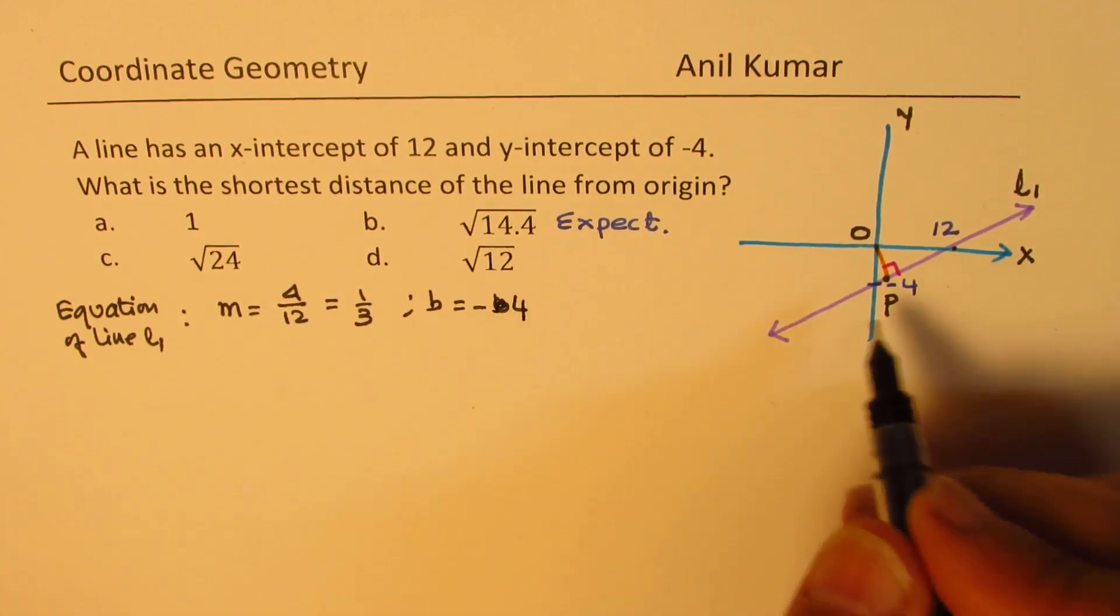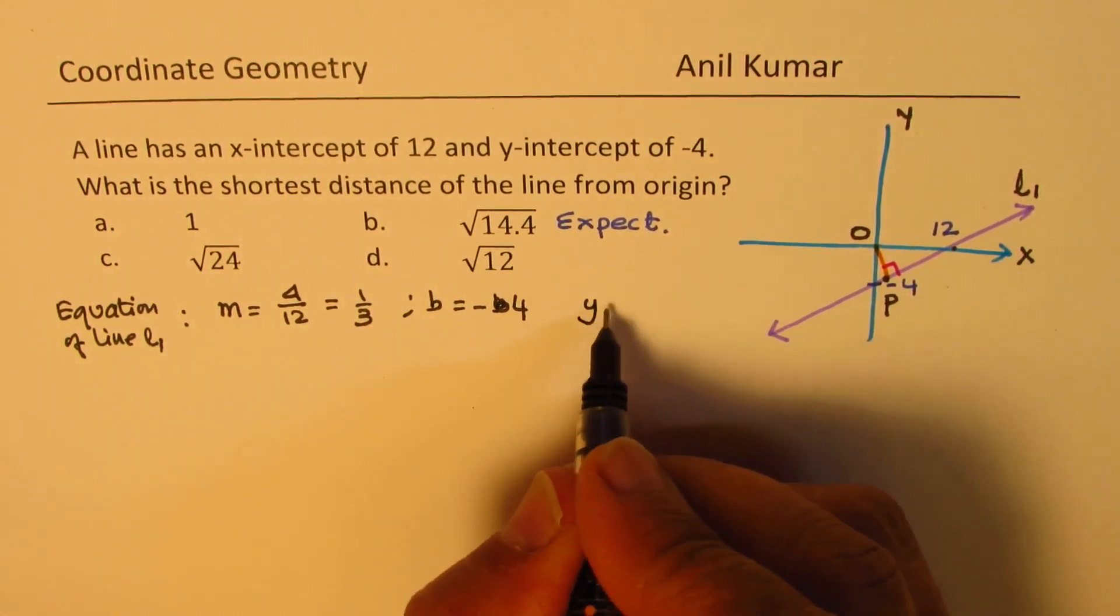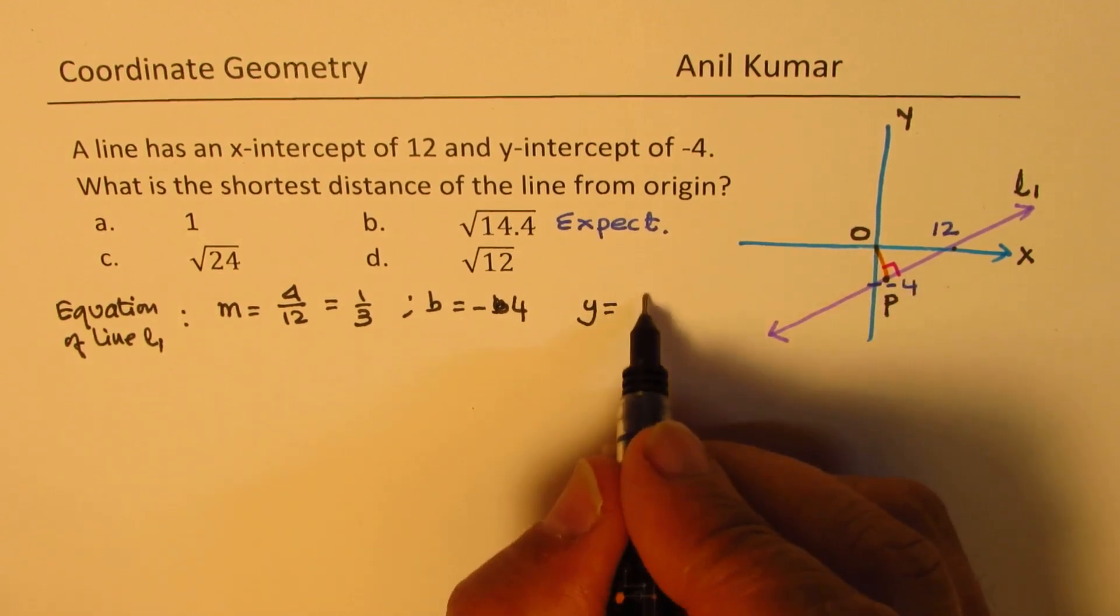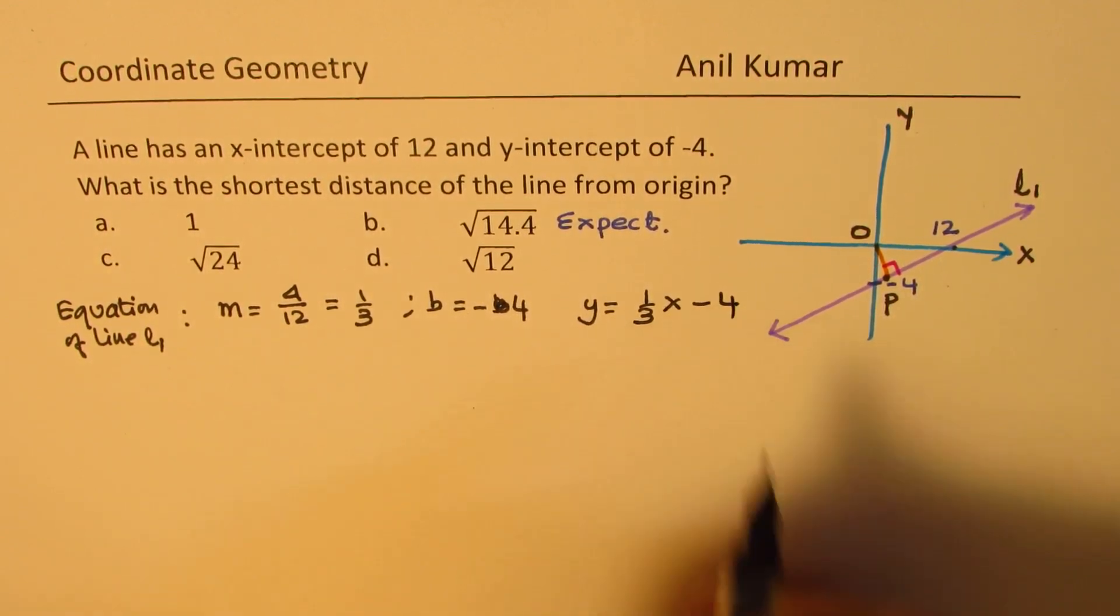So, the equation of this line is Y equals to 1 over 3X minus 4. Clear?